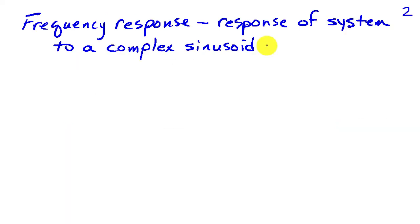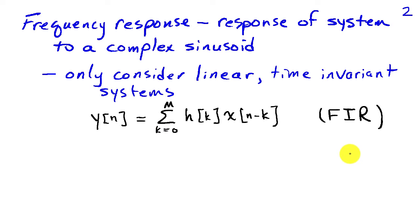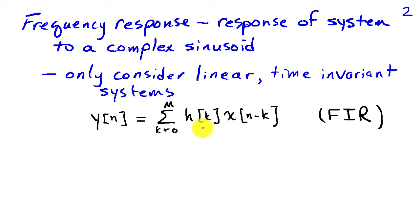The frequency response is obtained from the response of a system to a complex sinusoid. Frequency response is most useful for linear time invariant systems. In that case, we can write the output y of n as a weighted sum of the input. In the case of an FIR filter, it simply takes the m plus 1 current and past values of the input and adds them up with weights h of k.